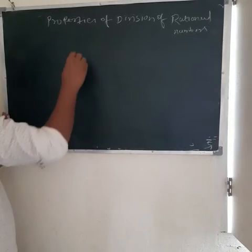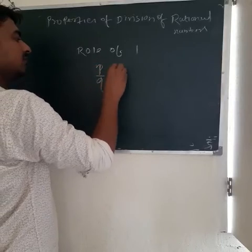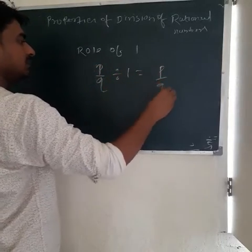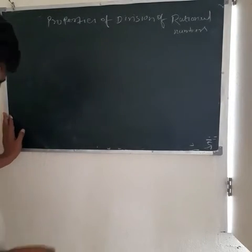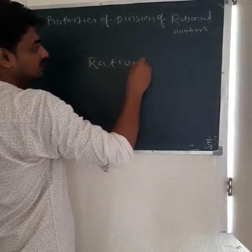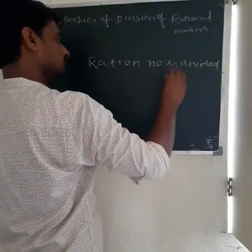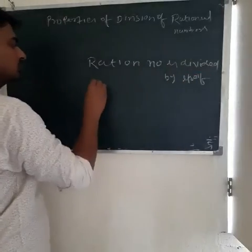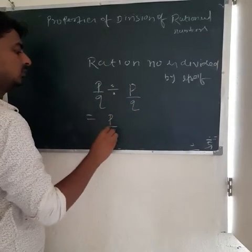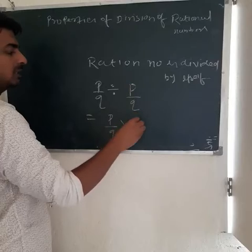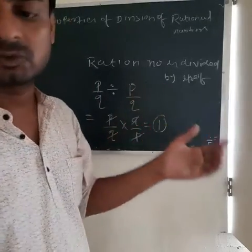Role of 1: If a rational number P upon Q is divided by 1, we will get P upon Q. Also, a rational number P upon Q divided by itself equals 1. For example: P upon Q multiplied by the reciprocal of P upon Q, which is Q upon P — P and Q cancel — equals 1. So a rational number divided by itself is equal to 1.